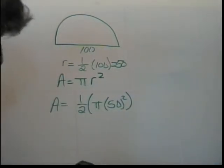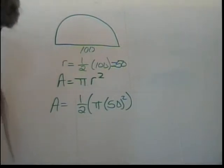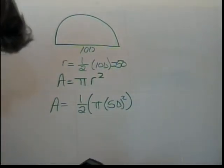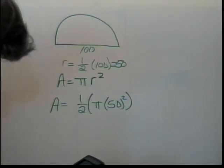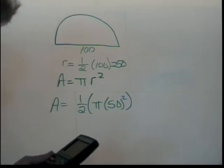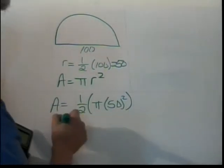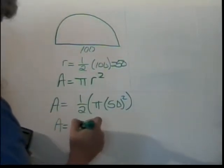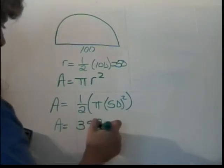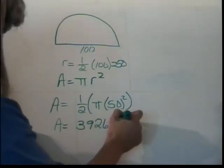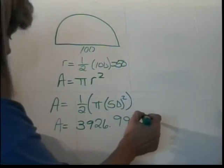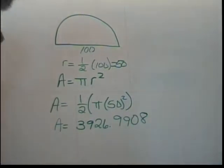So, the area of this thing is going to be one half times pi times our radius of 50 squared. So, that will turn out to be an area of 3,926.9908 square units.